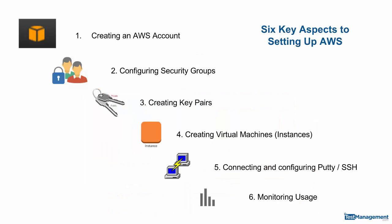There are six key areas to setting up AWS. One: creating the AWS account. Two: configuring the security groups. Three: creating the key pairs that we'll need to connect and decrypt our passwords. Four: creating the virtual machines, or as Amazon calls them, instances. Fifth: connecting and configuring PuTTY so that we can talk between our Windows and our Linux machine.